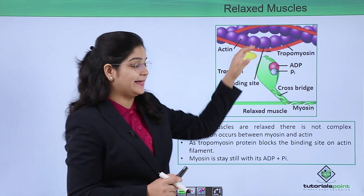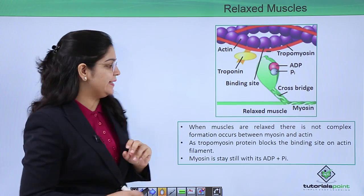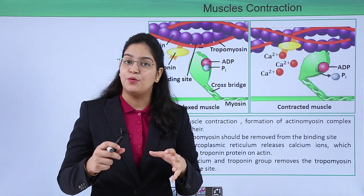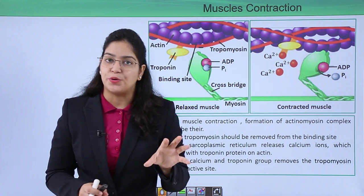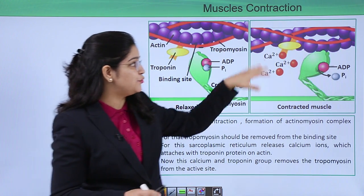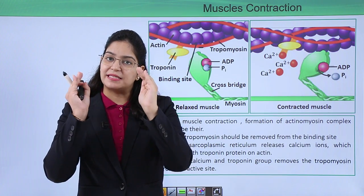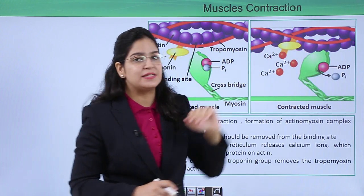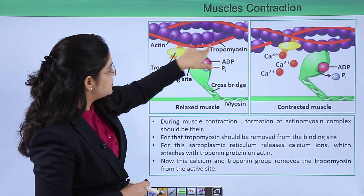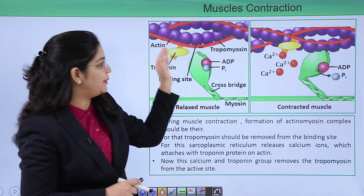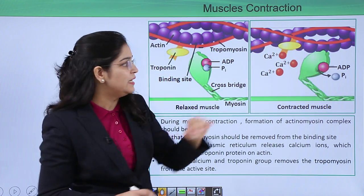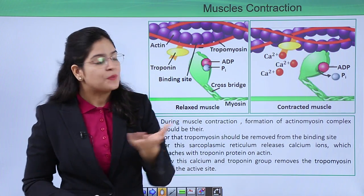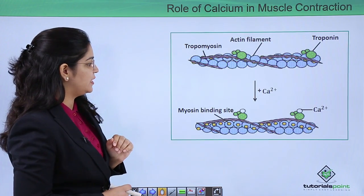When the muscles need to contract, our hero — calcium — comes in. Calcium binds with troponin, another protein that is directly attached to tropomyosin. When this calcium-troponin complex is formed, it removes the tropomyosin from the active site. You can see here: the red line represents tropomyosin on the active site. When the calcium-troponin complex forms, it removes tropomyosin from the binding site, and then the myosin head can easily attach to the binding site.